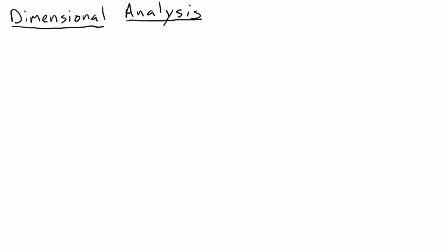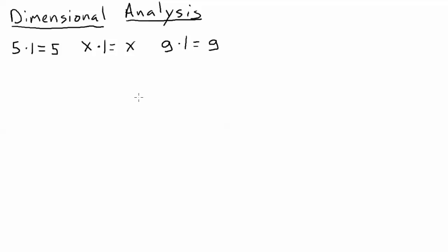Dimensional analysis uses the multiplication of fractions, so let's review a few basic concepts about fractions. The first thing is multiplying by 1. If you take a number and multiply it by 1, you always get the same number. This also works with variables — X times 1 equals X — and it works with units. So if you took a unit like grams and multiplied it by 1, you get the same unit. Anytime you multiply anything by 1, you always get the same thing.